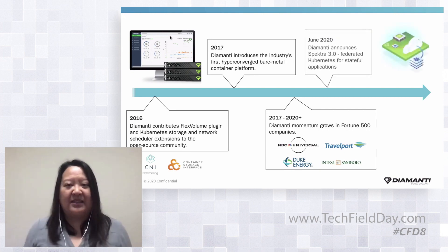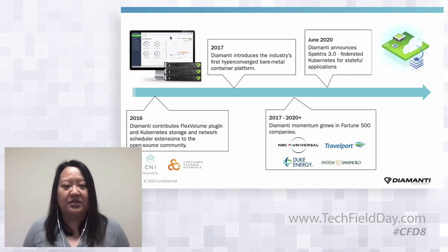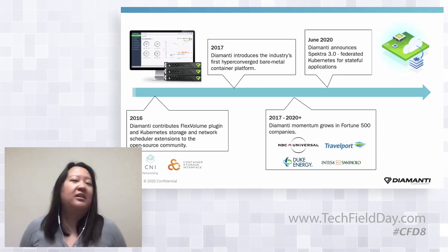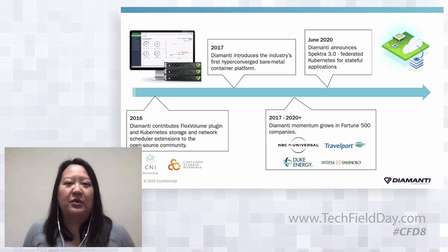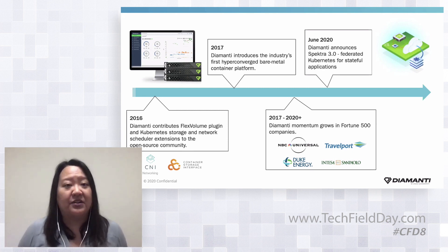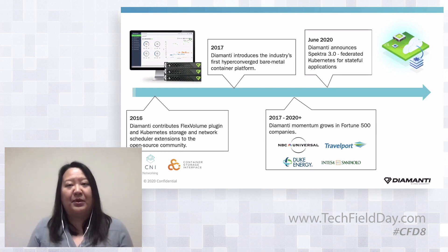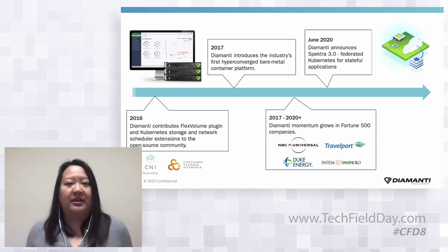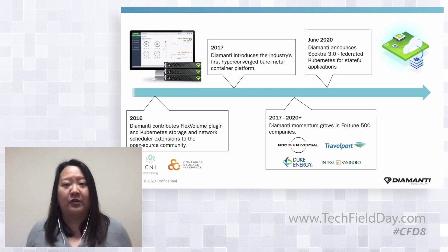Since then, we've grown our business, and this year we introduced Spectra 3.0, which is federated Kubernetes for stateful apps. Our core technology was founded on an appliance solution, but with our most recent release we've invested heavily in our software stack to deliver an enterprise-ready Kubernetes platform for hybrid cloud.